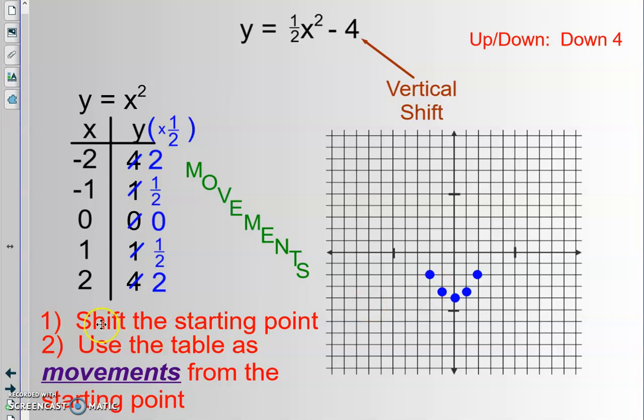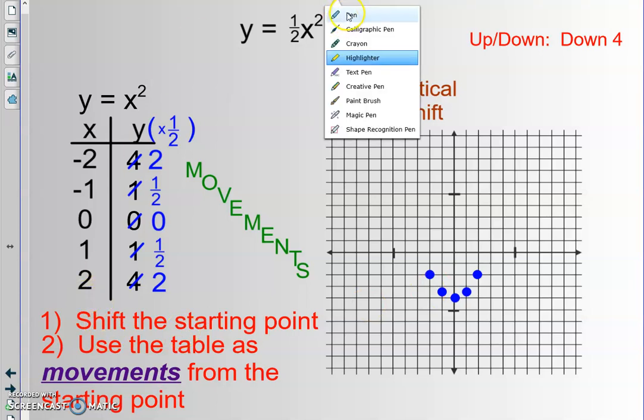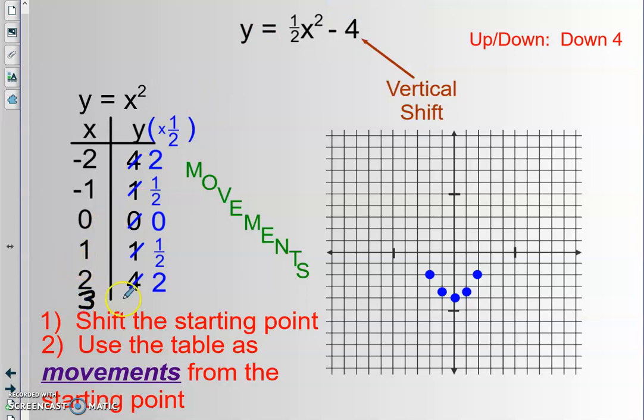Now, that might not be enough, so you might have to imagine more points. Like maybe we ought to say, okay, what if we had a 3 here? Then our y value would be 9, because y is equal to x squared. But with this scalar out in front, it would actually be 4 and a half. So from the origin, I'm going to move right 3, up 4 and a half. And I'll plot that point. And of course, I'm going to use some symmetry here. And then you could sketch a nice, smooth curve.